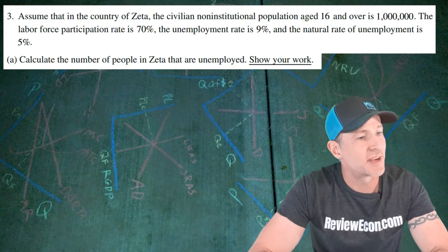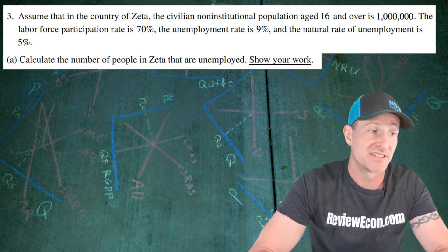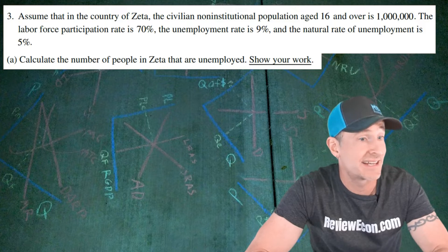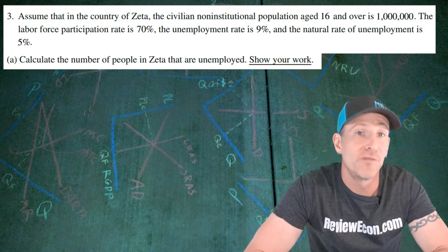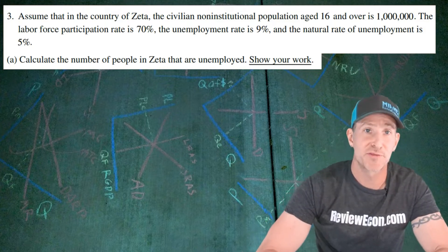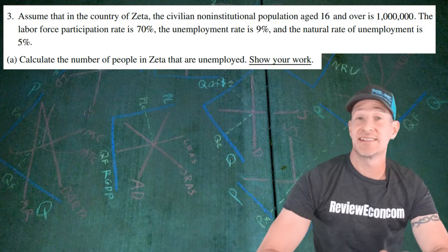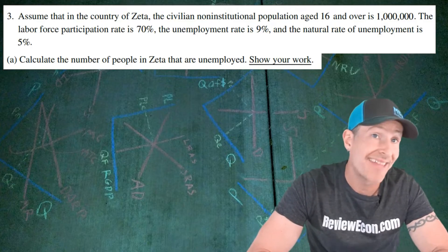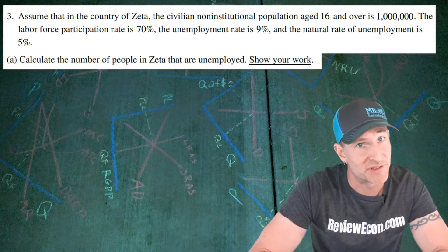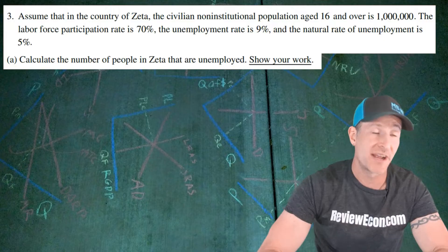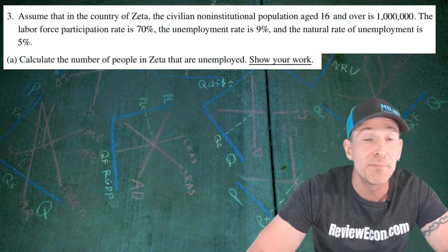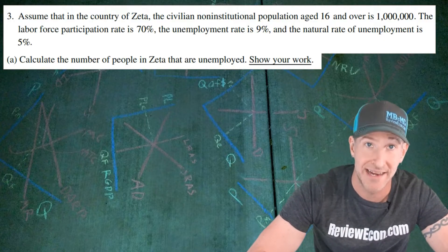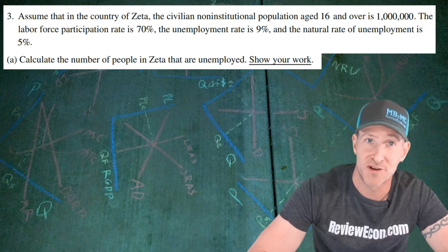This question starts off with the country of Zeta. They have a civilian non-institutional population that is 16 and over of 1 million people. The labor force participation rate is 70%, the unemployment rate is 9%, and the natural rate of unemployment is 5%. For part A, we have to calculate the number of people that are unemployed in Zeta, and we have to show our work.